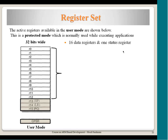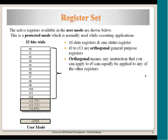There are 16 data registers and one status register. R0 to R13 are orthogonal general-purpose registers — meaning any instruction that can be done with R0 can be done with any other register. For example, an ADD instruction could use R0, R1, R2 or equally R5, R6, R7. These registers can be freely used in assembly instructions based on which ones are available.